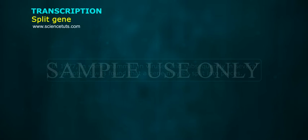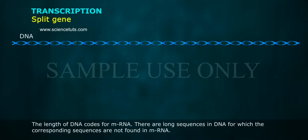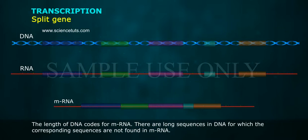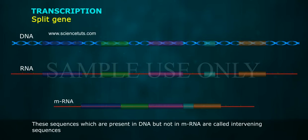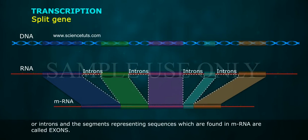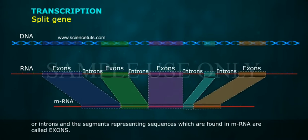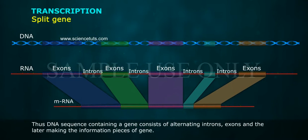In 1977, in some mammalian viruses and subsequently in several eukaryotes, it was found that a gene may be split into pieces. There are long sequences in DNA for which the corresponding sequences are not found in mRNA. These sequences are called intervening sequences or introns, and the segments representing sequences found in mRNA are called exons. A gene consists of alternating introns and exons, with exons making the information pieces of the gene.